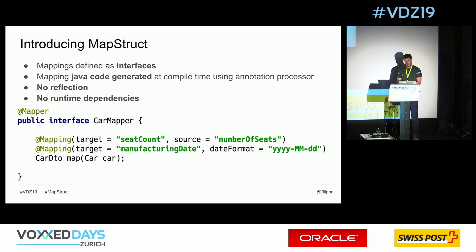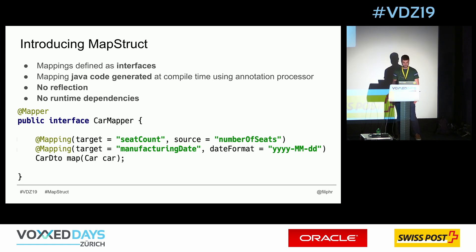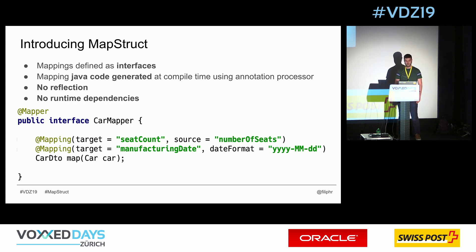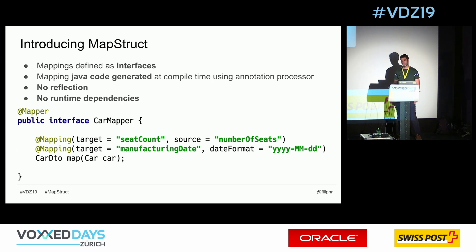That's why we have MapStruct. MapStruct is an annotation processor that generates Java code for you, and it's really easy to use. You just need to define an interface — all your mappings are within an interface — and MapStruct will generate the implementation with all this boring code. It uses no reflection and has no runtime dependencies; you only need it during compilation. These annotations are not even in the bytecode — they're only in the source code.